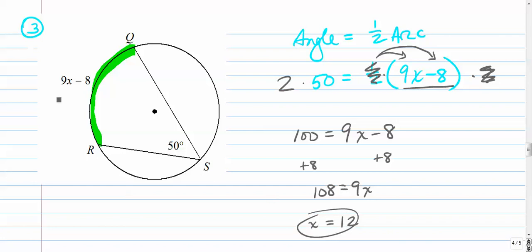And you can check that really quickly. 9 times 12 is 108. 108 minus 8 is 100. 100 is twice as big as the angle. The angle is half as big as 100.